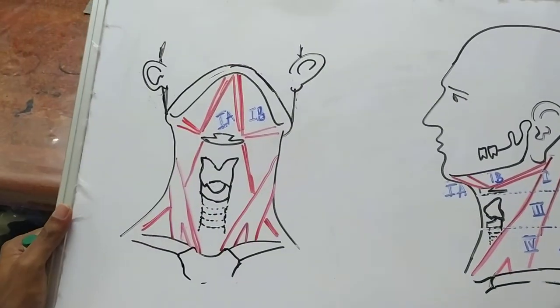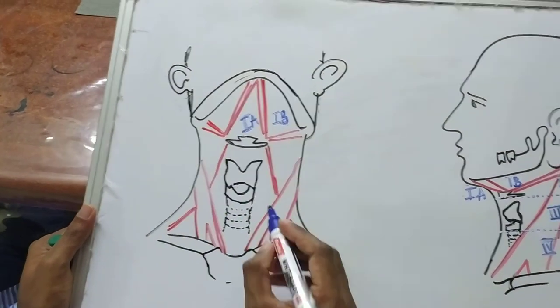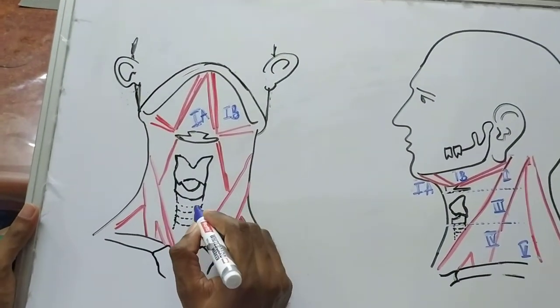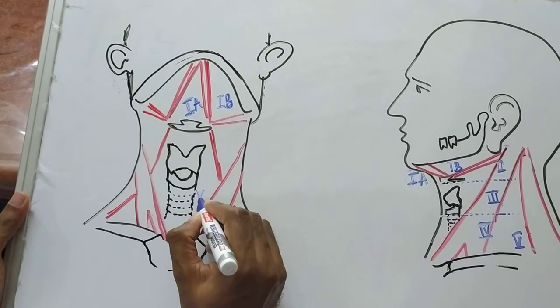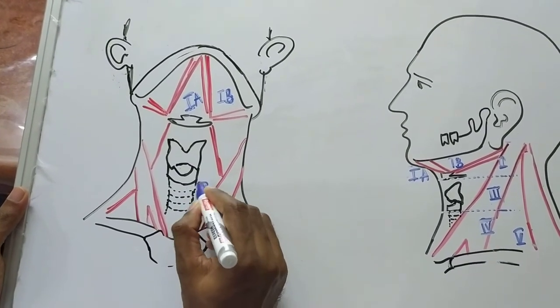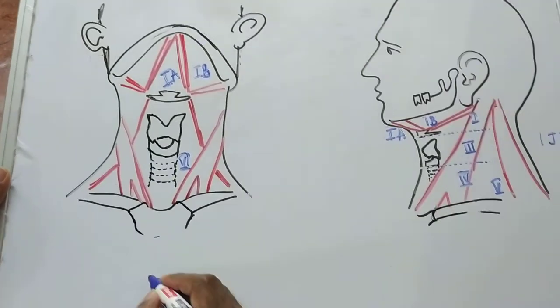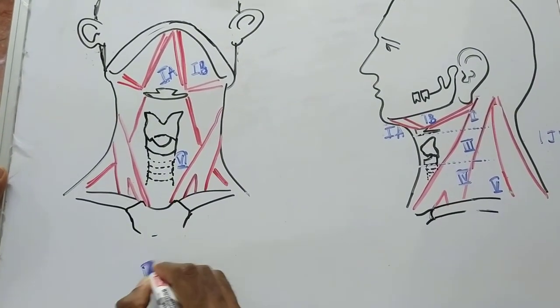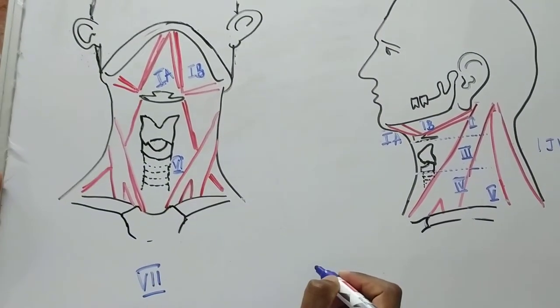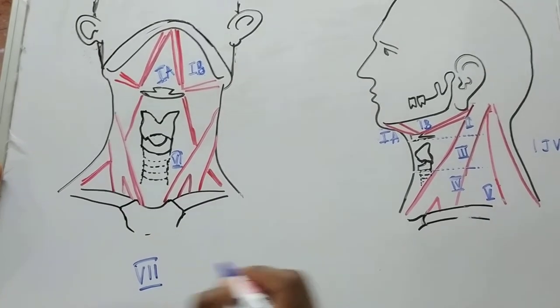Coming back to the frontal view, level 6 are the pre and the paratracheal group of lymph nodes. Level 7 will be the mediastinal group of lymph nodes. Thank you.